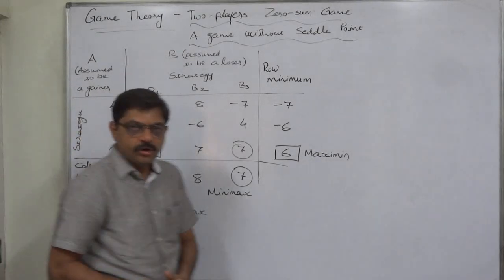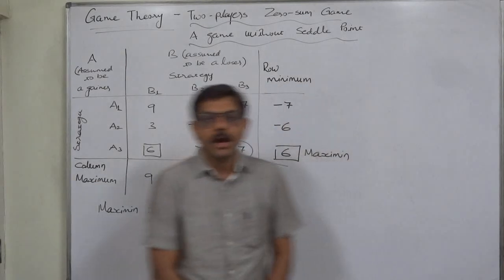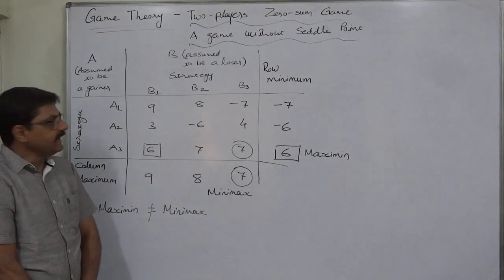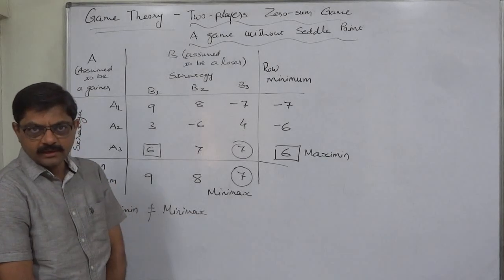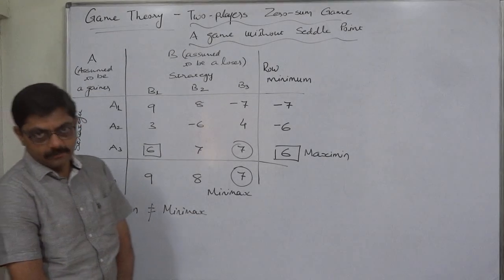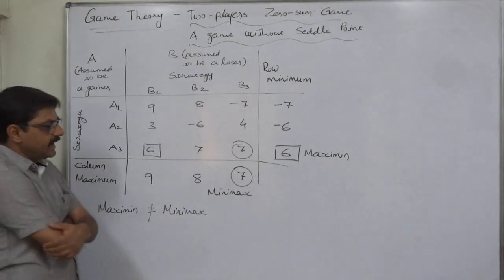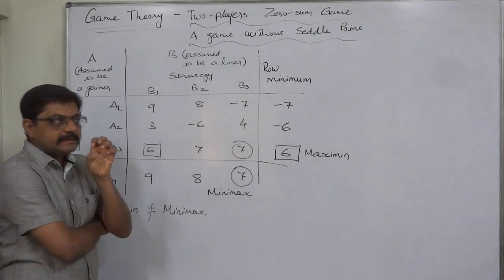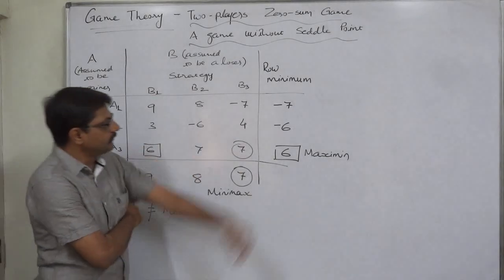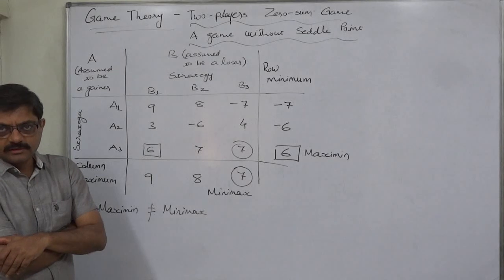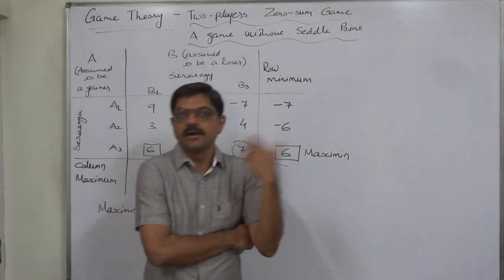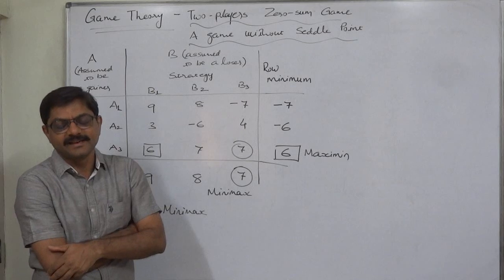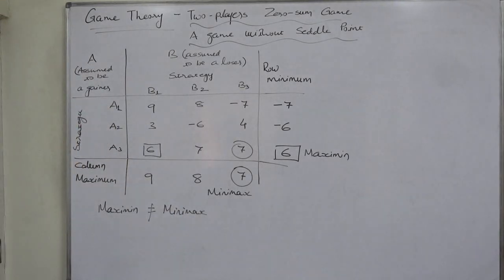In the forthcoming videos we are going to discuss how to decide strategies for the players in the case of a game without saddle point, and how to find the value of such a game. Because if the game has no unique saddle point, we cannot find the value of the game solely on the basis of the maximin and minimax values — hence we have to use other methods. Thank you very much.